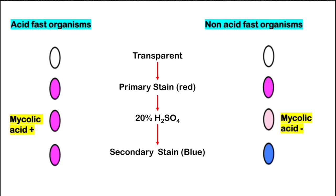Here is the procedure summary: initially all bacteria are colorless, then we add the primary stain and both acid fast and non-acid fast bacteria take up the color. Then we add 20% H2SO4. Organisms which do not have mycolic acid in their cell wall lose the primary stain. We then add the secondary stain; the non-acid fast organisms take up the secondary stain but not the acid fast organisms. This acid fastness is due to the presence of mycolic acid in the cell wall.